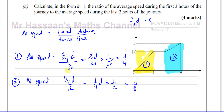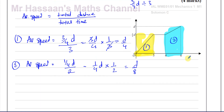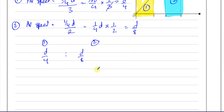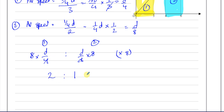So they're asking for the ratio of the average speed from the first and second part. The ratio is d over four to d over eight. To write it in simplest form, multiply both sides by eight: that gives you two and one. The d's cancel out, so you end up with two to one. That is the answer to part a.